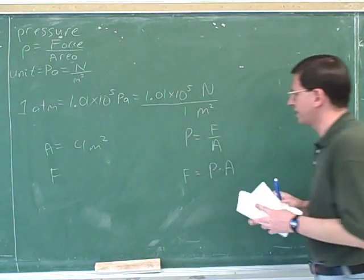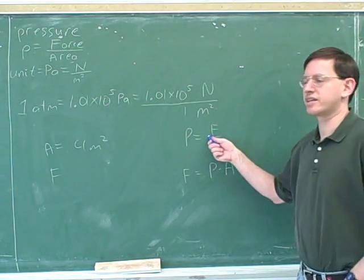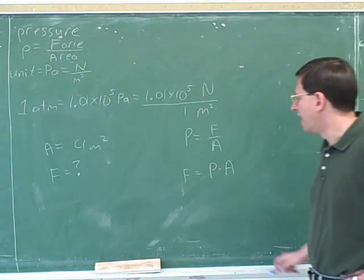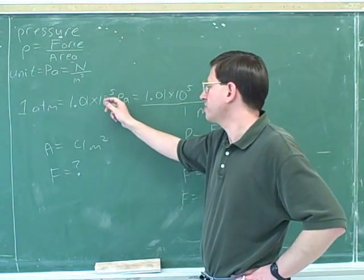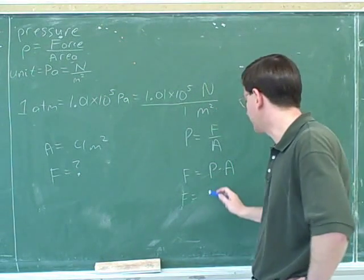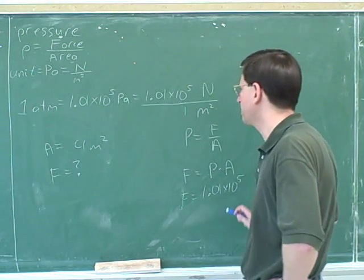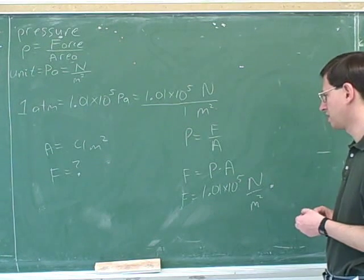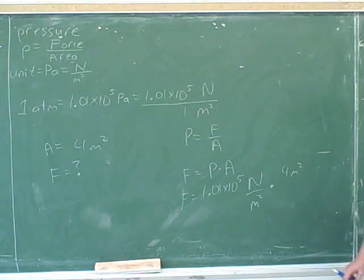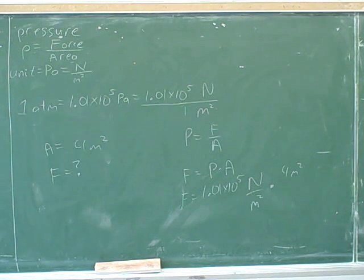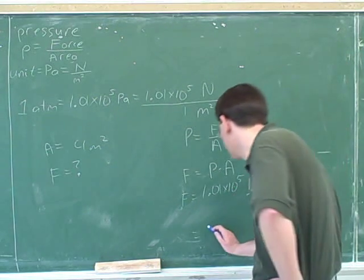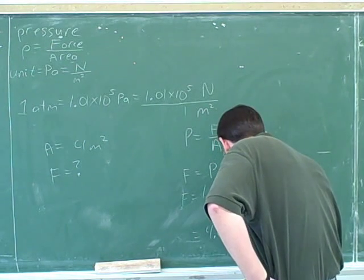We're using the pressure formula and solving for force. The 1.01 times 10 to the 5th is the pressure, not the force, so we plug it in for pressure: 1.01 times 10 to the 5th Newtons per square meter. The area is four square meters. Multiplying them together, the square meter units cancel and we're left with 4.04 times 10 to the 5th Newtons.